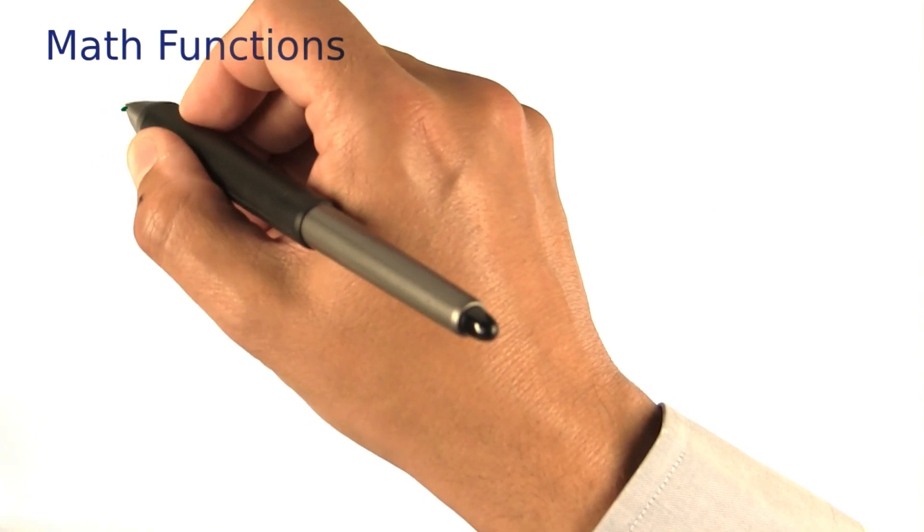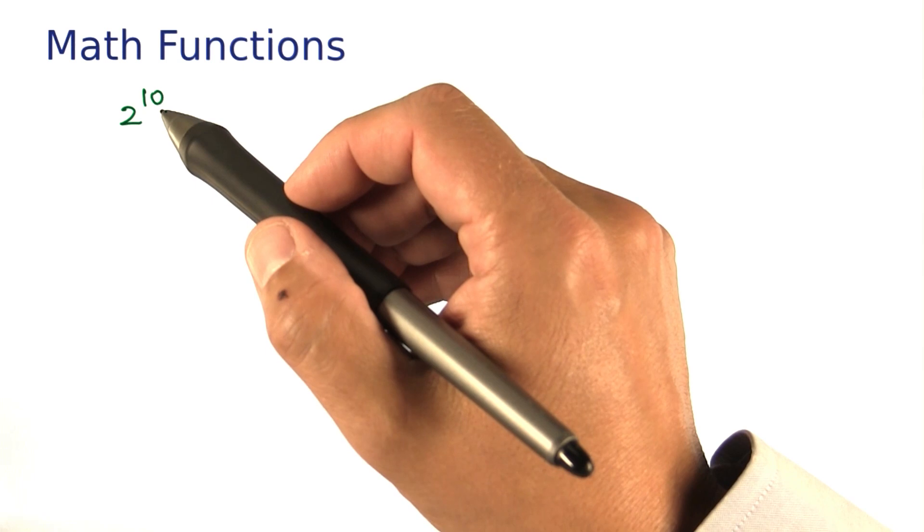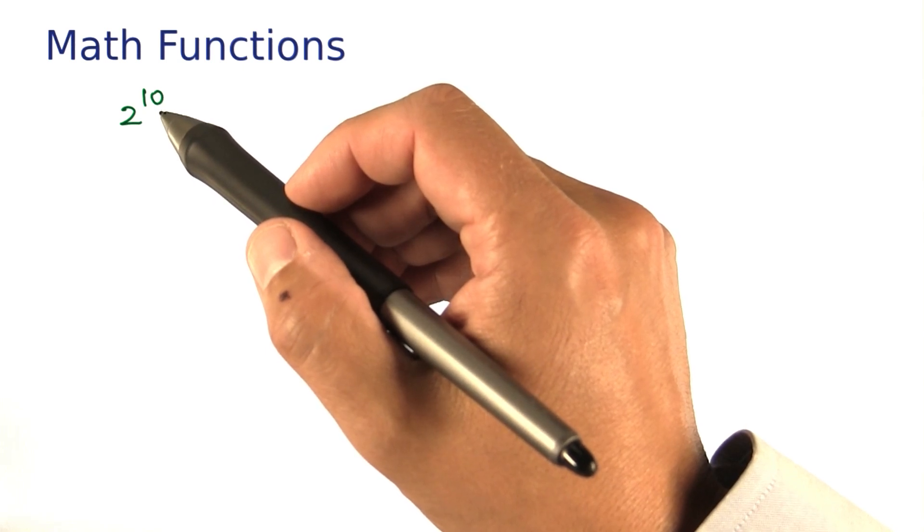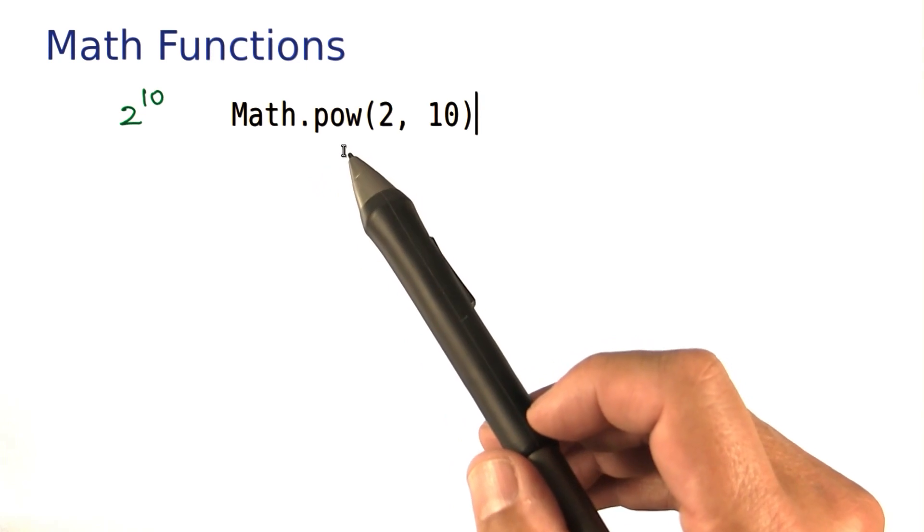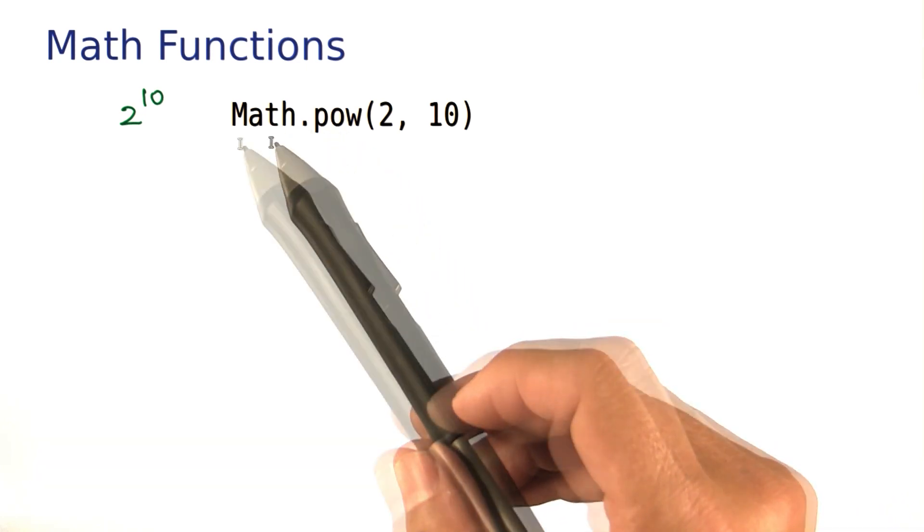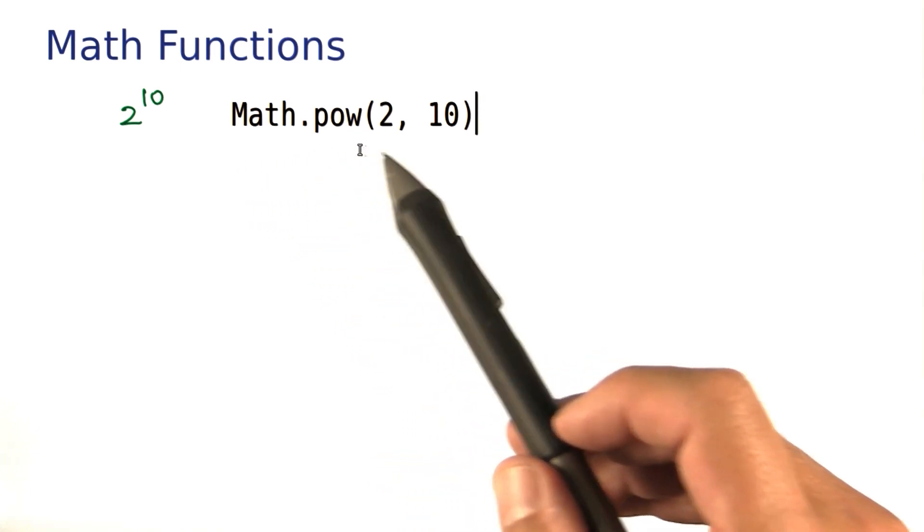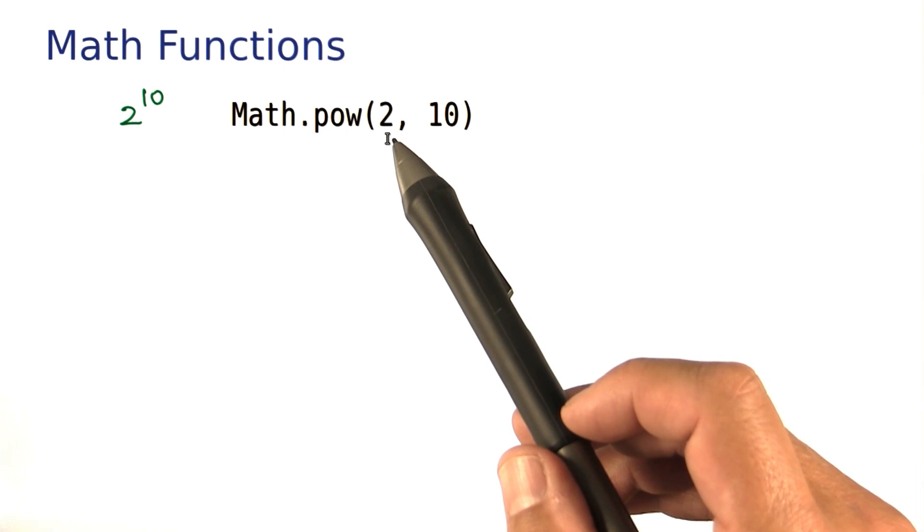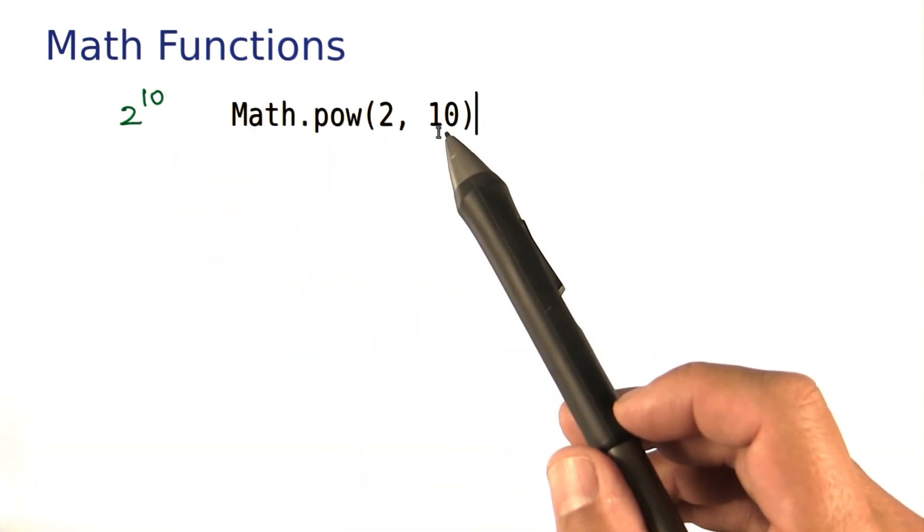Let's say you need to compute a power, such as 2 to the 10th. You can't write that exponent neatly in Java. Instead, you use a function, and the syntax looks like this. The function name is pow. It's in a class called Math. You have to reference it as Math.pow. Then you give it the 2 operands. The 2 goes here, and the 10 becomes the second one.